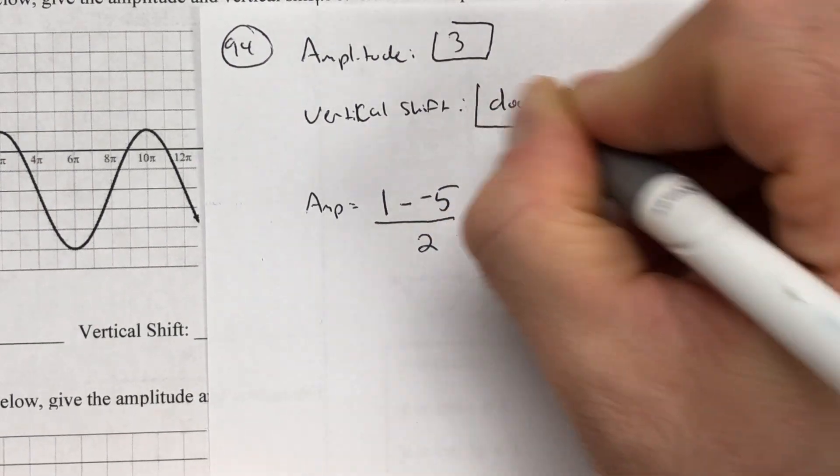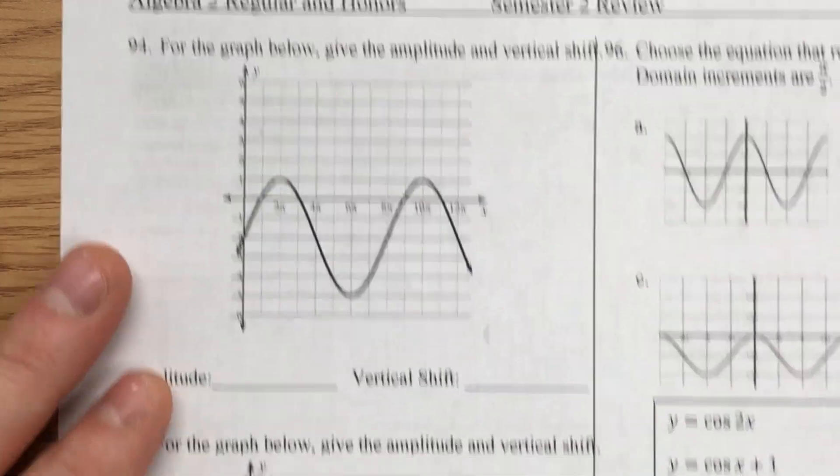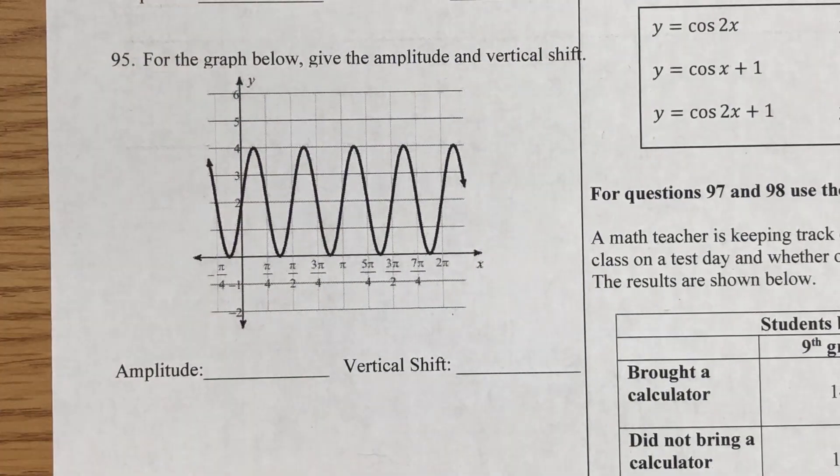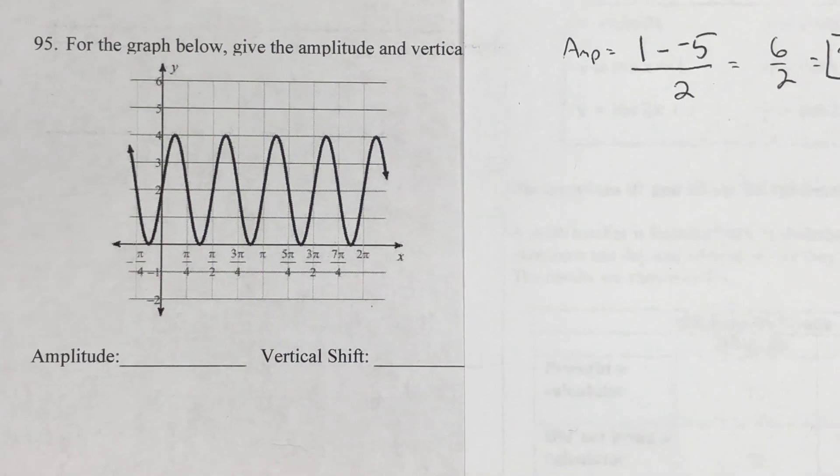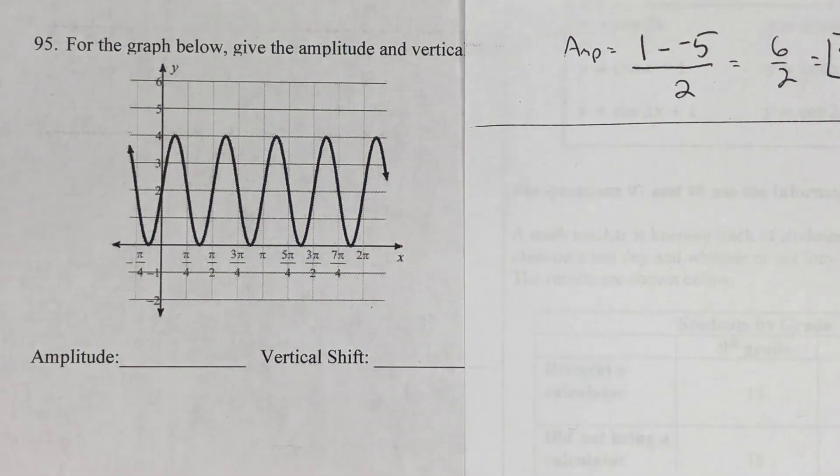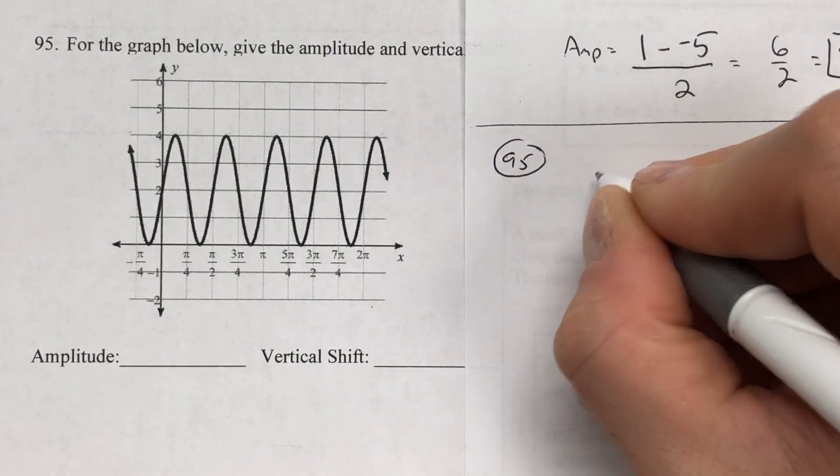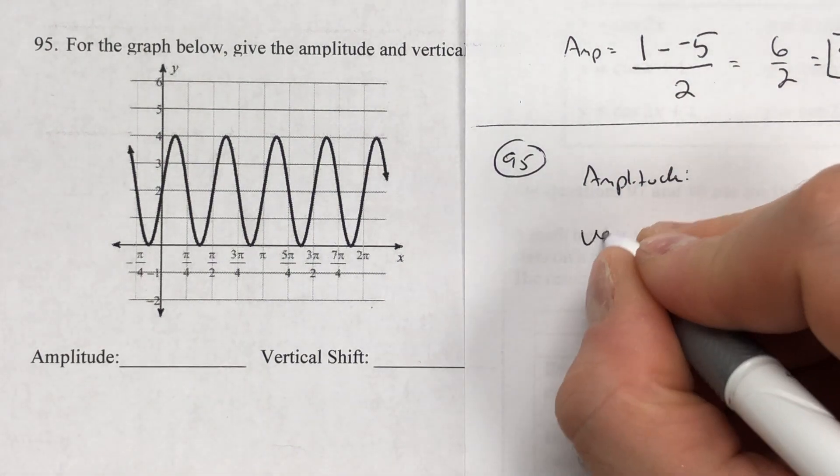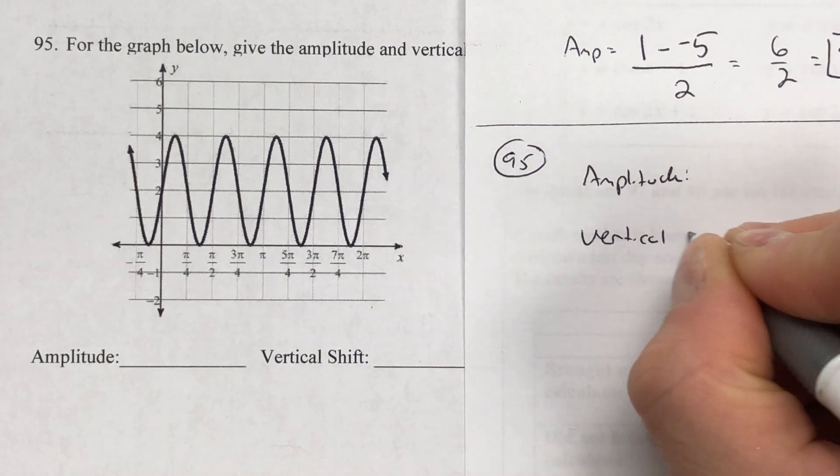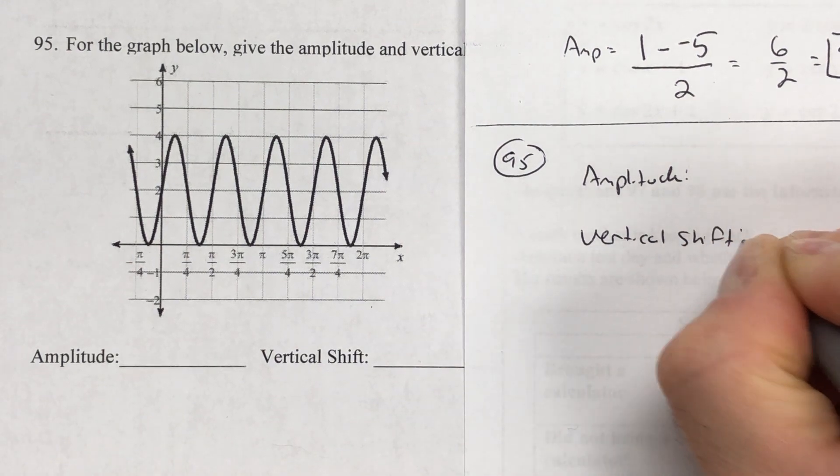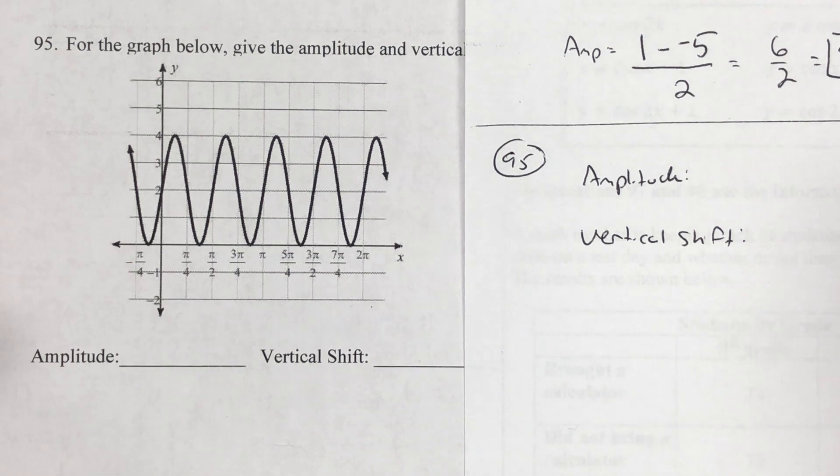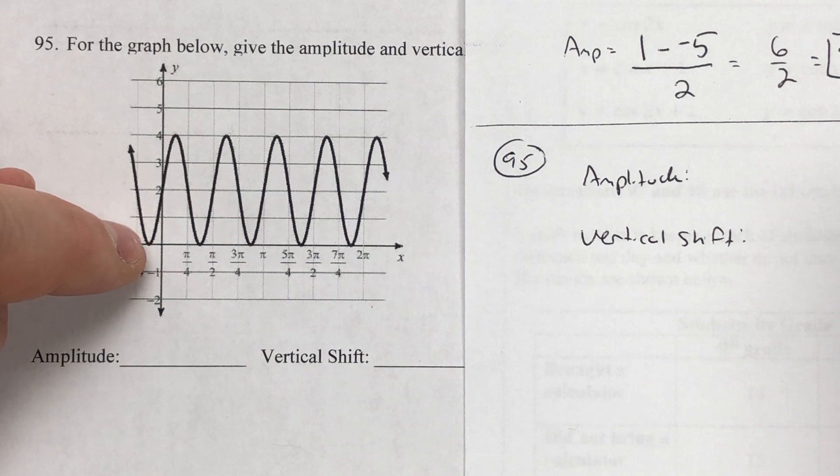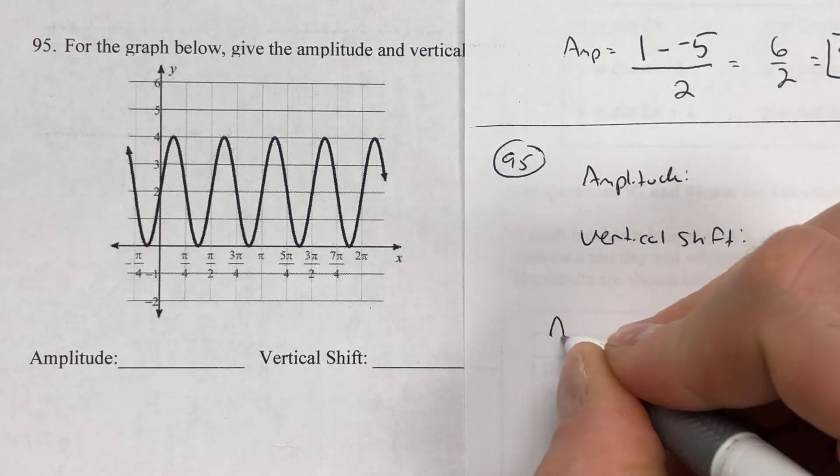Question 95 is a similar graph, same style question. So I want to figure out what is the amplitude and what is the vertical shift. Well, the amplitude we figured out I can just look at the maximum height and subtract the minimum height. I have a maximum height of 4, a minimum height of 0. So for the amplitude, I'll say 4 minus 0 and divide it in half: 4 divided by 2 equals 2.